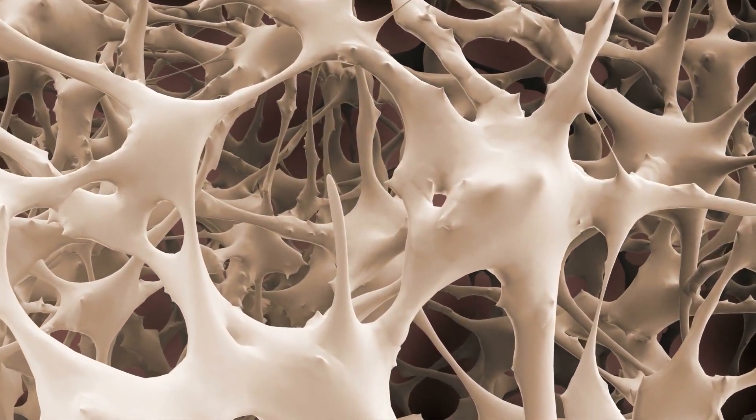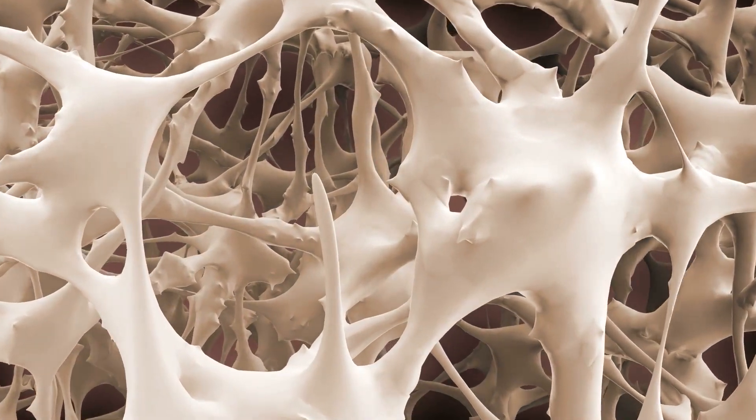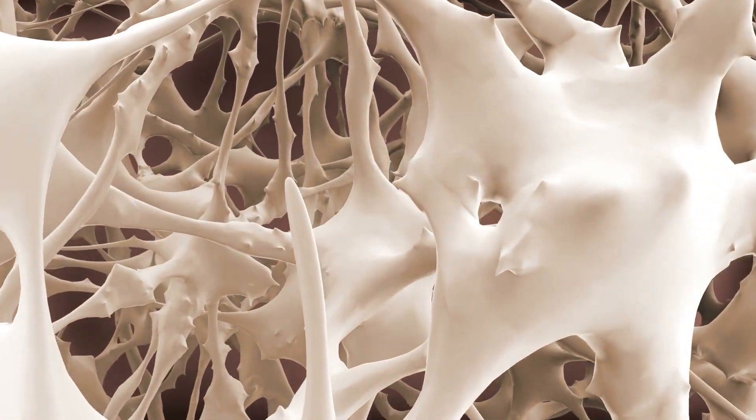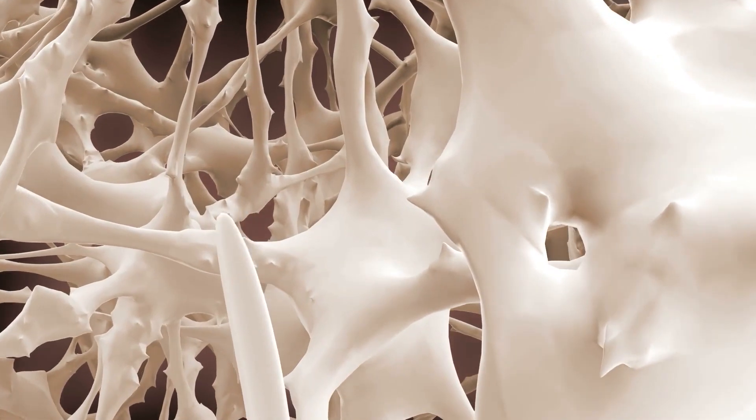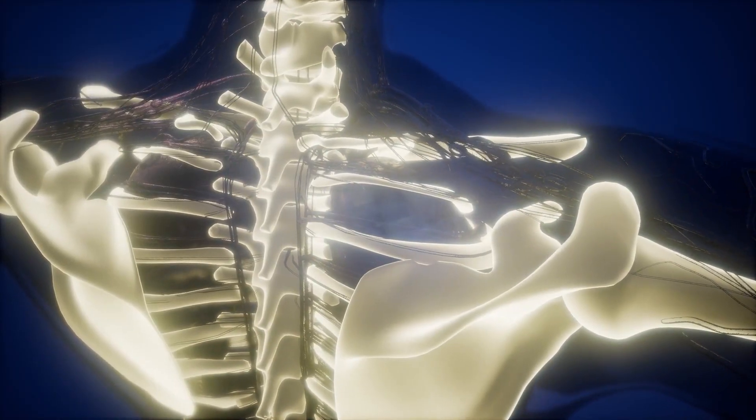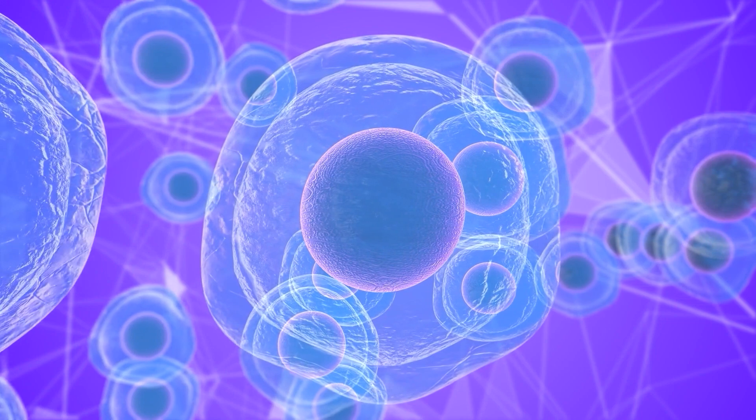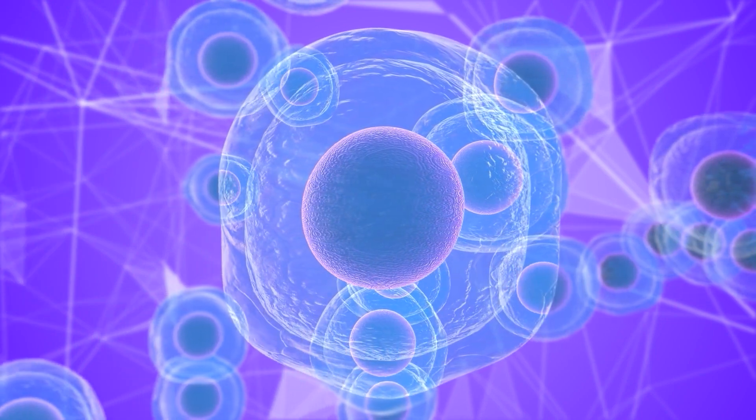If the immune system is a police force, the bone marrow is the police academy because this is where the different types of immune system cells are created. All cells of the immune system are created in the bone marrow from a common type of starting cell called a stem cell.